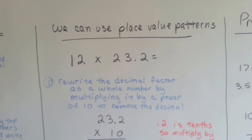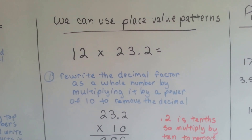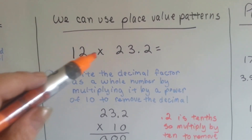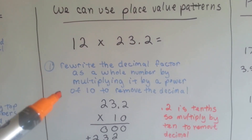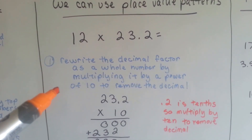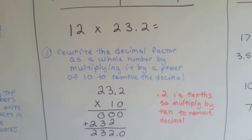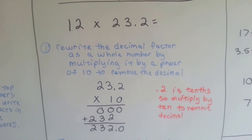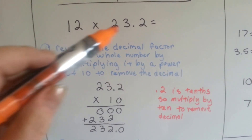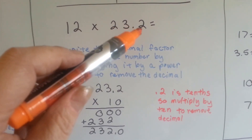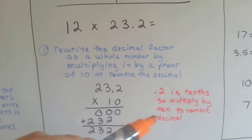We can also use place value patterns. For 12 times 23 and 2 tenths, we would rewrite the decimal factor as a whole number by multiplying it by a power of 10 to remove the decimal. Because this is tenths, to remove it we would multiply it by 10.